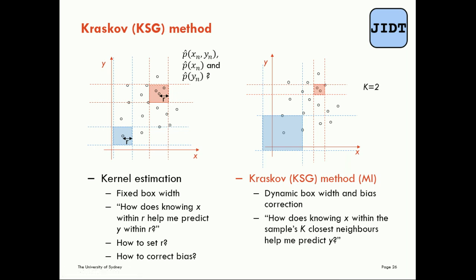So there are a few differences we see straight away to the kernel estimation. We also need to think about how this is changing the question that mutual information is asking. It's now answering the question: how does knowing our value x within the sample's k-closest neighbours in the full joint space help me predict y? You can see how that's a subtly different question to what the kernel estimator is addressing, although they're both giving us an estimate of mutual information.